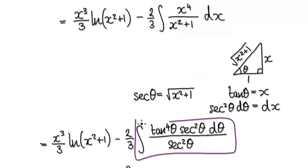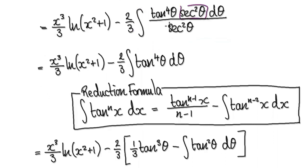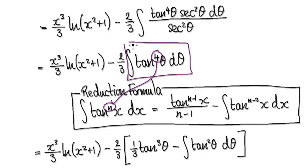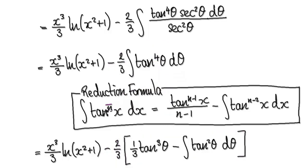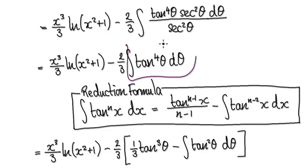Now let's work on this. Tidying up, the secant squared terms cancel, bringing us to an integral of tan to the power of 4. Apply the tan reduction formula with n=4: n minus 1 gives 3, and n minus 2 gives 2. So using the reduction formula, the expression becomes this — with your minus 2 over 3 constant carried through.